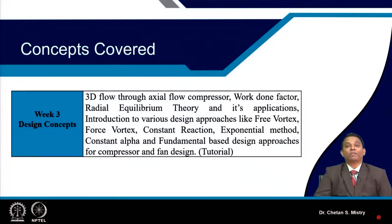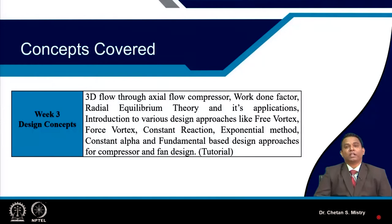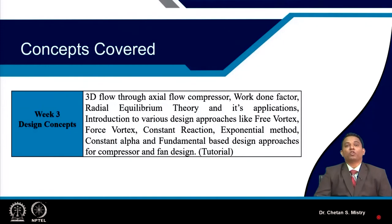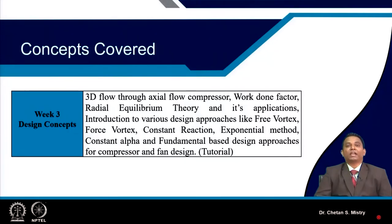One more parameter we realized is the presence of centrifugal action because of rotation. We also realized our blades have twist — that twist is because of change of radius at the entry and exit, giving different blade angles. That is what gives 3-dimensionality to the flow within the blade passage. After that, we started deriving the fundamental equation called the radial equilibrium equation and derived the vortex energy equation.